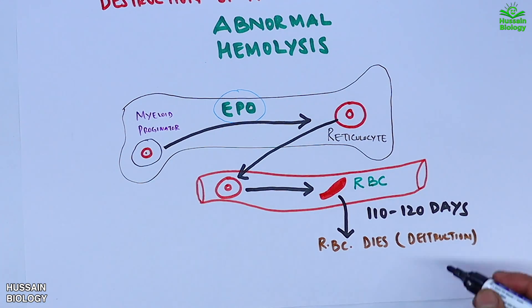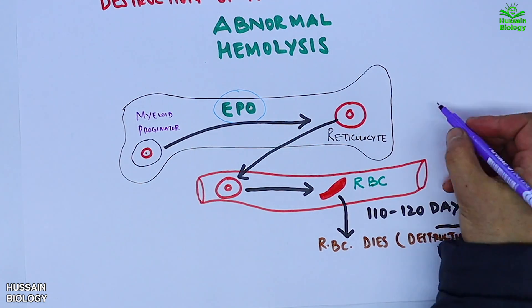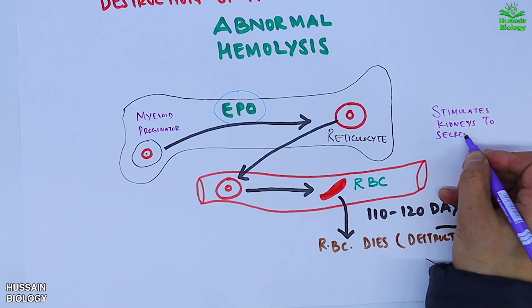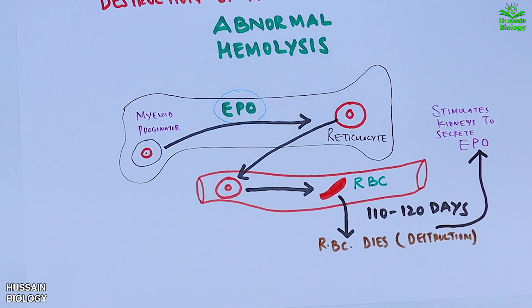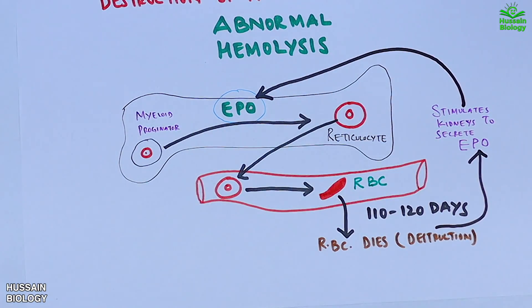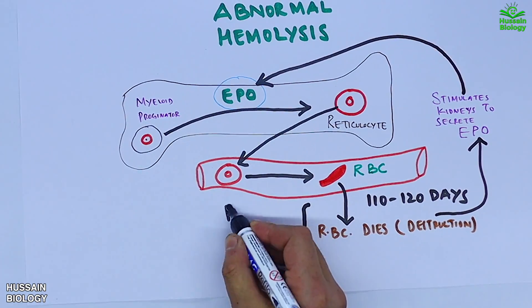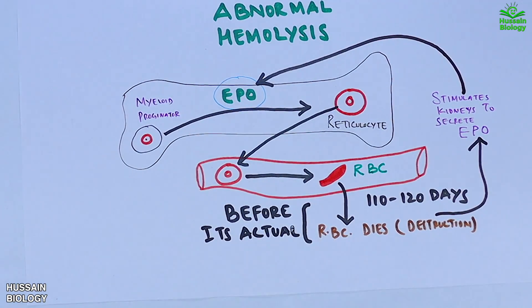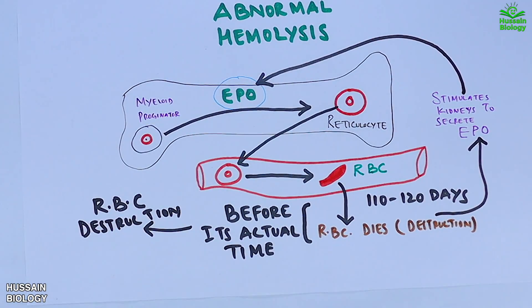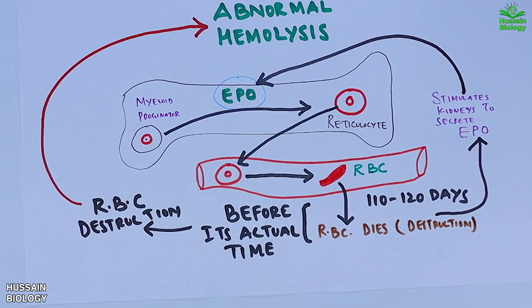This normal destruction of RBCs stimulates the kidneys to secrete more and more EPO hormone to drive more erythropoiesis. But when there is some malfunction, the RBC dies off before its actual time, and that is called abnormal hemolysis.